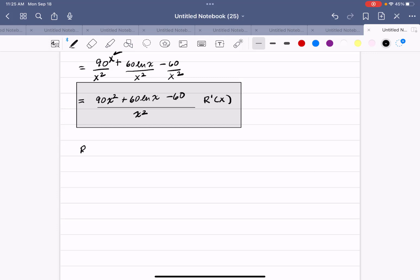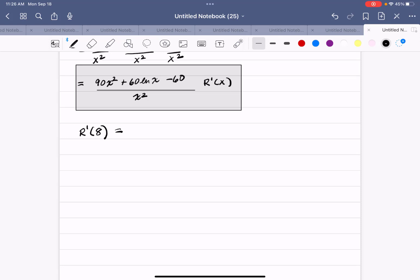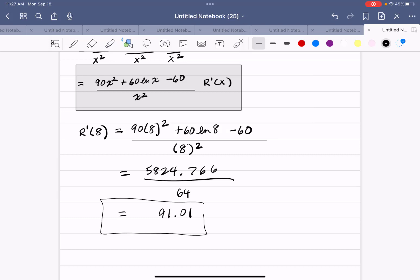Then they ask me to find R prime of 8. So that will be 90 times 8 squared plus 60 natural log of 8 minus 60, all of that is over 8 squared. So I'll use my calculator to get my numerator number, 90 parentheses 8 to the second plus 60 natural log of 8 close parentheses minus 60 is 5824.766 divided by 64, that's going to come out to 91 and a penny. So our revenue is changing at the 8th item by $91 and a penny.